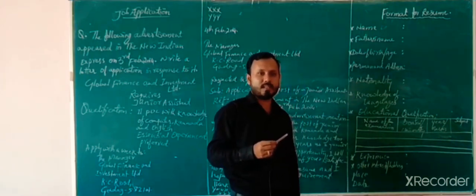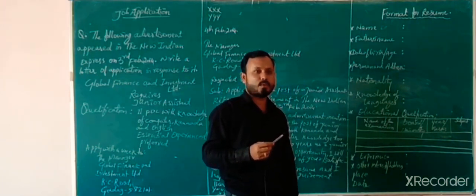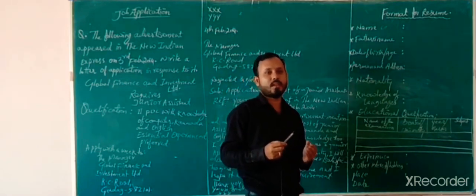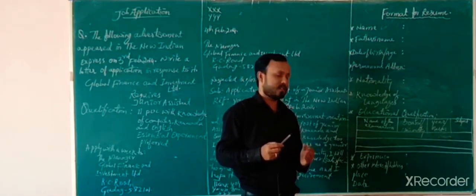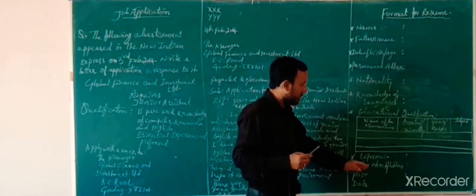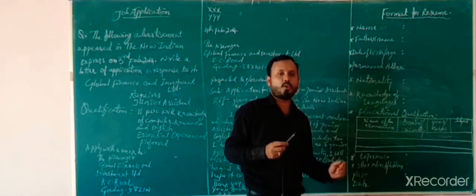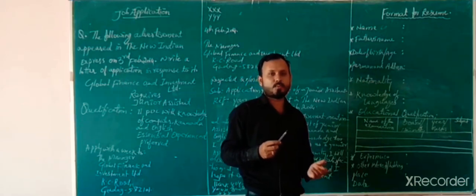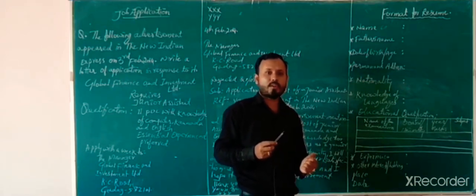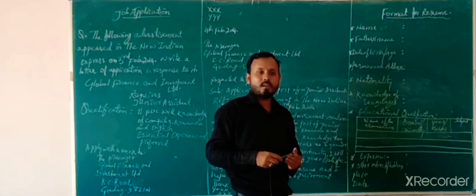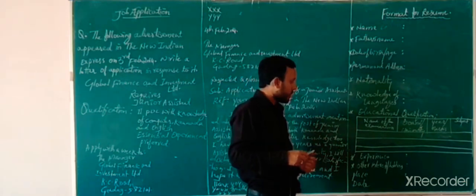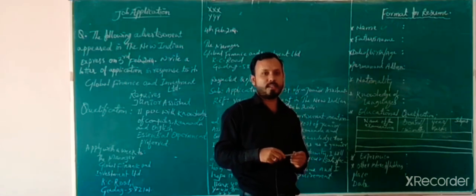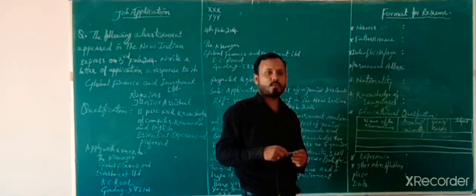For experience, write: 'I have worked as Junior Assistant for two years,' or 'I have two years of experience working as Junior Assistant.' Then write Other Interests or Hobbies. For example: 'I am interested in sports,' or 'My hobbies are reading poetry and collecting information.'